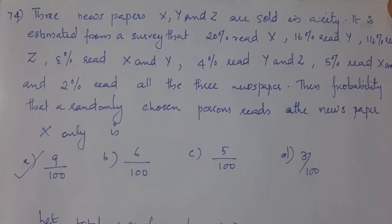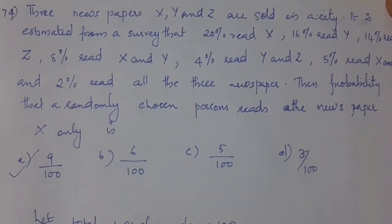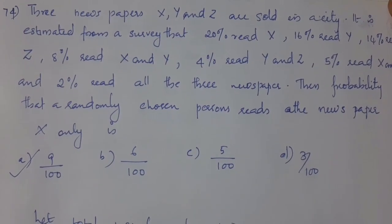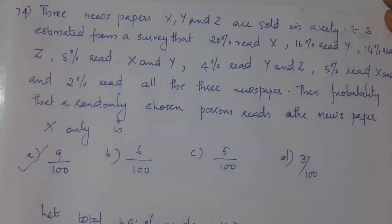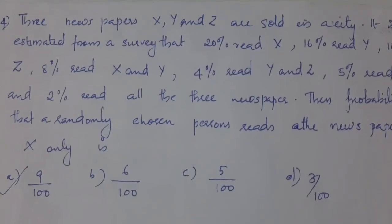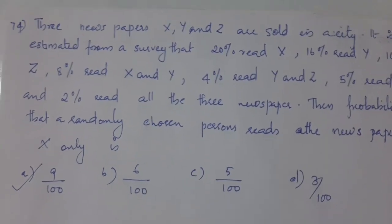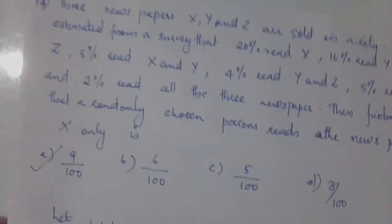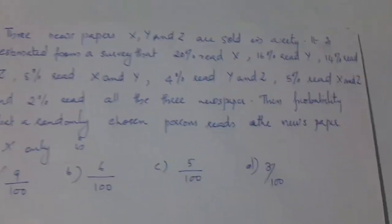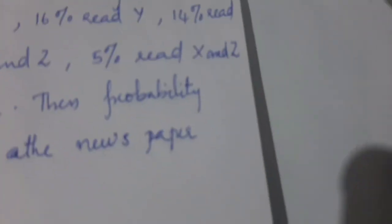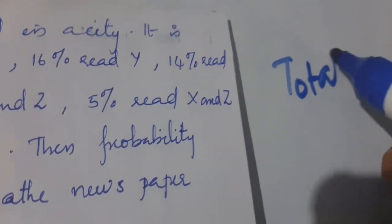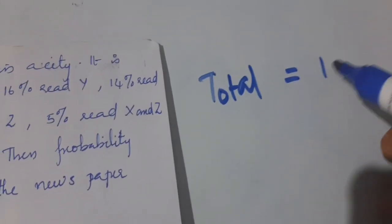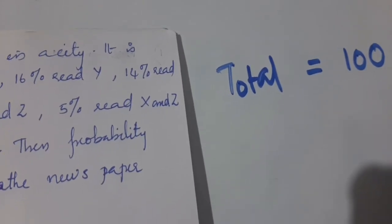The probability that a randomly chosen person reads newspaper X only is to be found. This is a set theory probability application. We take total = 100, so we work with percentages directly.